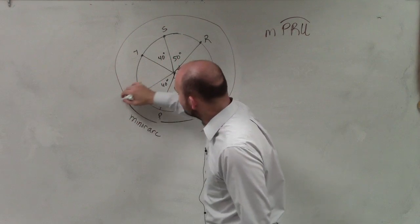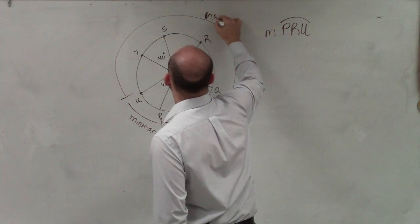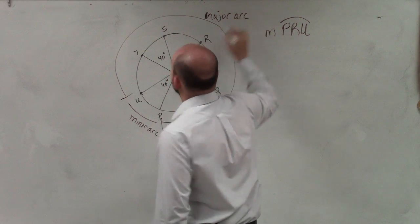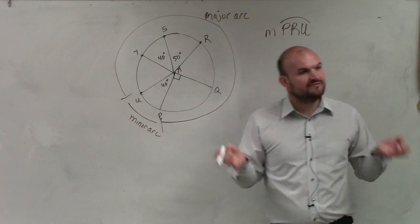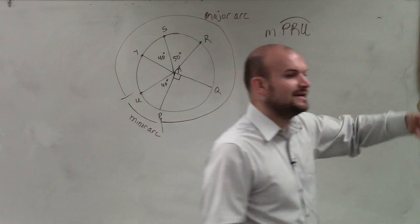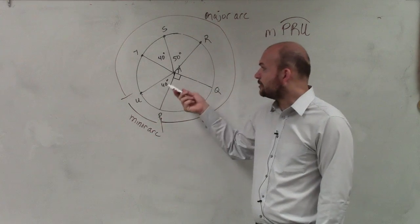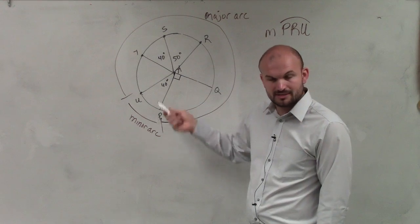This measurement of the arc that we're trying to figure out is what we call our major arc. When we're determining the measurement of our minor arc, all we need to do is look at the central angle. So this minor arc is the angle of the central angle, which is 40 degrees.